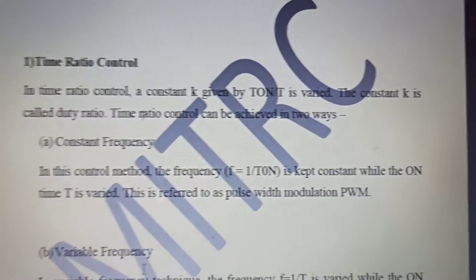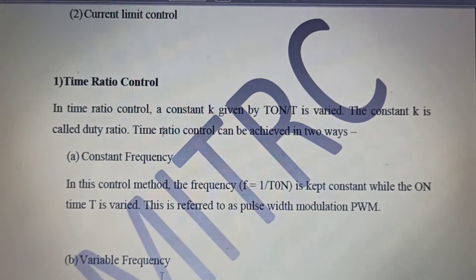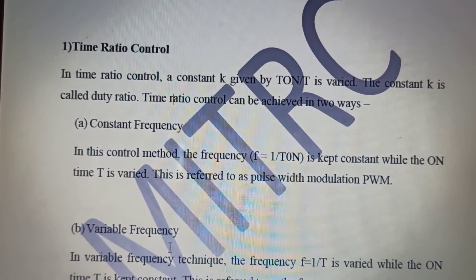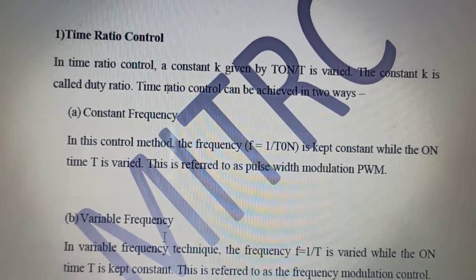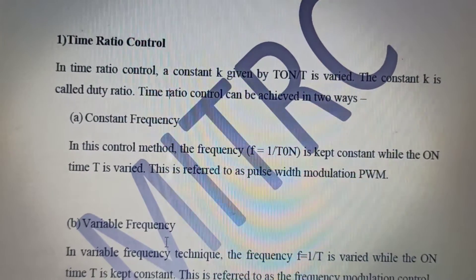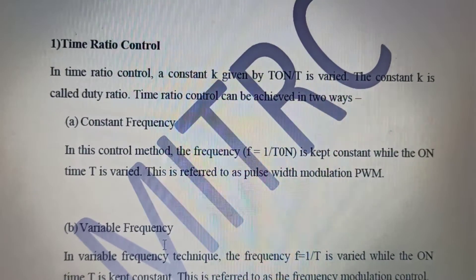So only one thing will vary and that is the on-time. The on-time T will vary, but the original time will remain constant. This is known as the classic case of pulse width modulation, the classic case of pulse width modulation. It is very important - pulse width modulation.